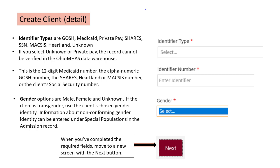The identifier type tells Ohio MHAS the source of the client identification number, which helps with the verification process. Your options are GOSH, Medicaid, Private Pay, Shares, Social Security Number, McSys, Heartland, or Unknown. If you select unknown or private pay, the record will not be processed by Ohio MHAS. You may choose to use the private pay option if you'd like to enter all clients served by your agency into the OBIS records system, but those records will not be included in any reports of your data in the OBIS reports application.